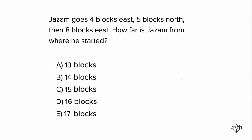Just remember, if you're going east at one point and then later it says west, just make sure you go in the opposite direction — that's all you have to worry about with that. So it's asking how far is Jazam from where he started? Let's draw a little point — J for Jazam — then draw a little line going to the right and label it four for the four blocks east. Now five blocks north, so let's go up five. We'll draw a line and label it five, then another line for eight blocks east going to the right, labeled eight.